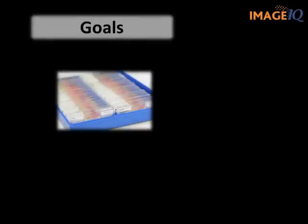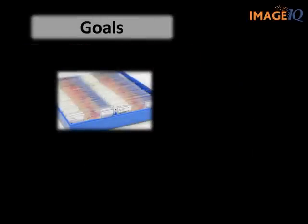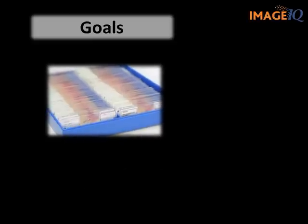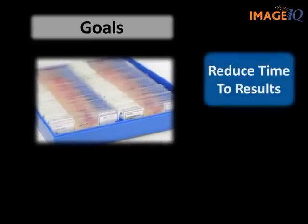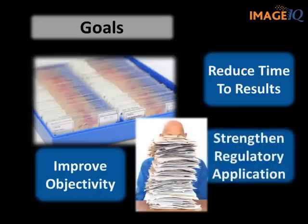The client was trying to measure bone in and bone on growth by having multiple technicians manually score hundreds of histology slides. They were frustrated by the lack of speed, imprecision, the cost, and the variability of their manual scoring techniques. The primary concern was that the subjective and qualitative nature of their data might slow down or prevent regulatory approval.